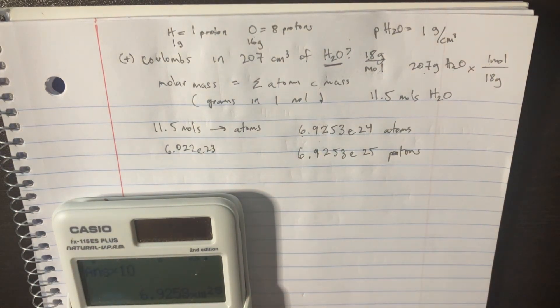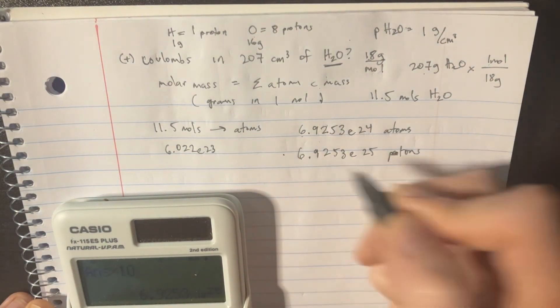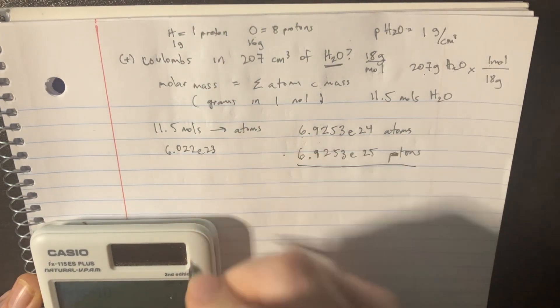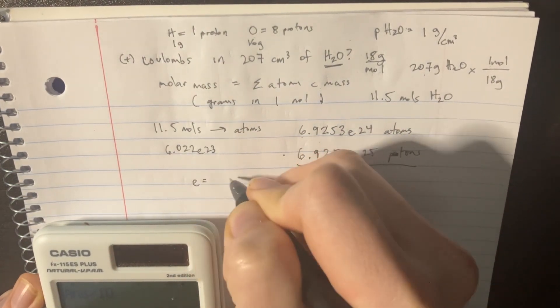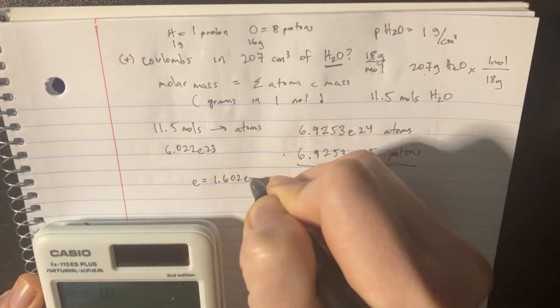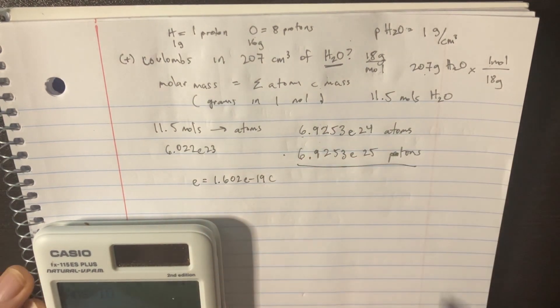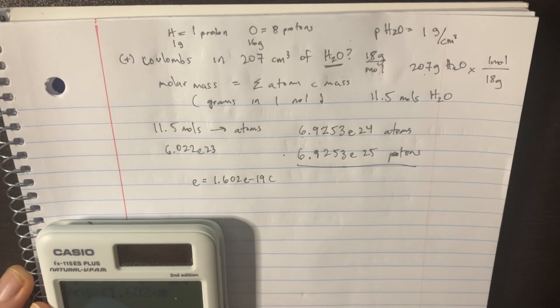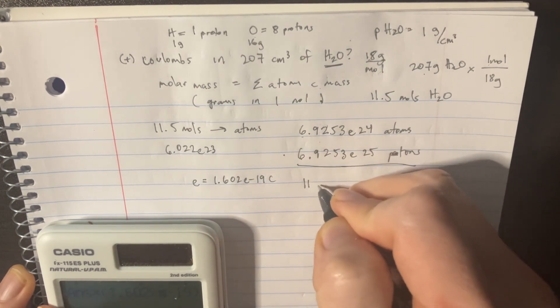And now we can calculate, based off the number of protons, we've got to multiply this by the number e. So that's going to be 1.602 to the negative 19 coulombs right there. And we can just do that. 1.602 to the negative 19th. And the total is like this big number.